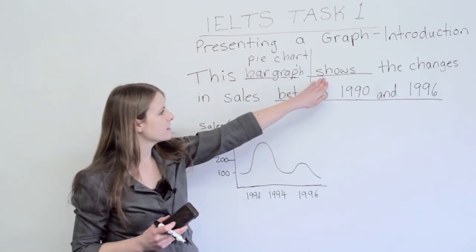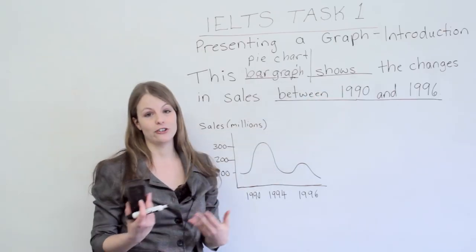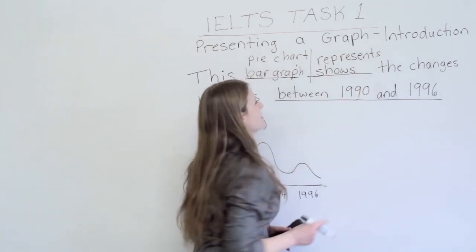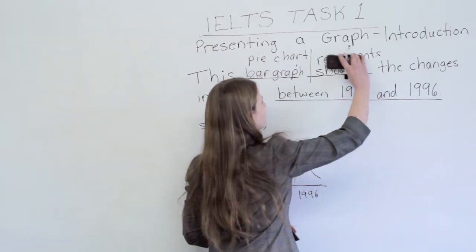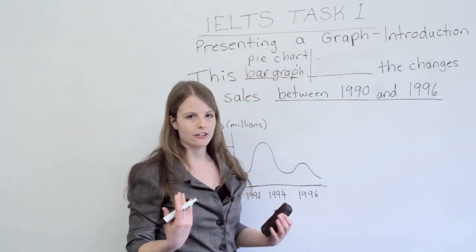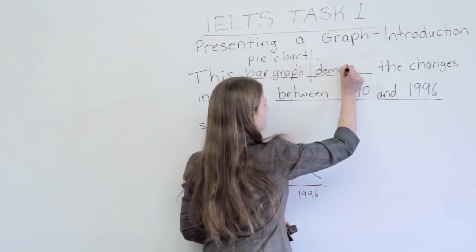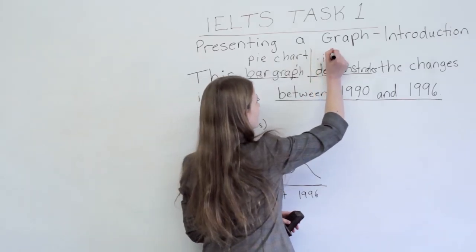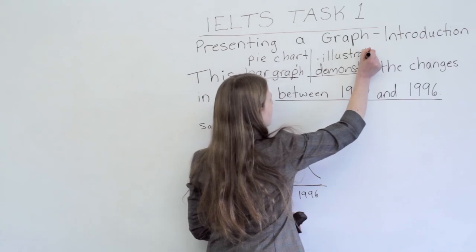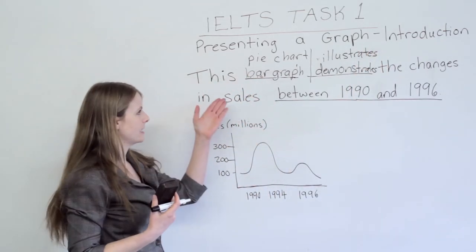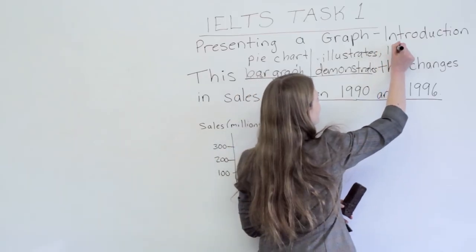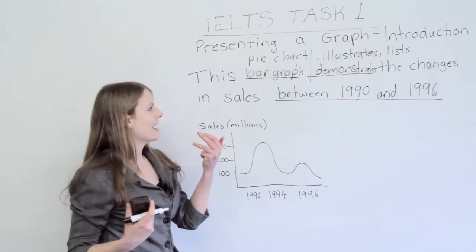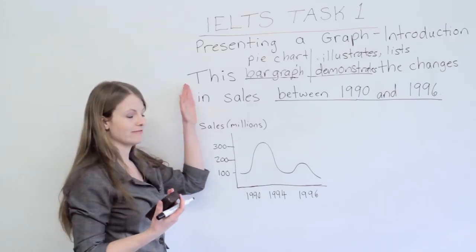For the verb in your introduction, 'shows' is good, but you have other options. You could use 'represents' — 'this pie chart represents...' You could use 'demonstrates' — 'this pie chart demonstrates...' Or 'illustrates' — 'this bar graph illustrates...' If you're doing a table, you could say 'this table lists...' So shows, demonstrates, represents, illustrates — these are all really good verbs to use for the first sentence of your introduction.